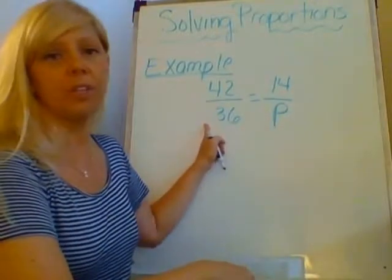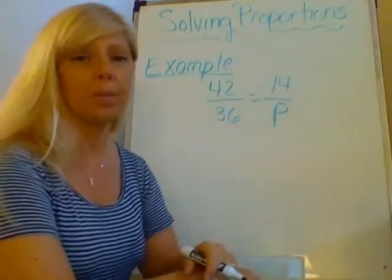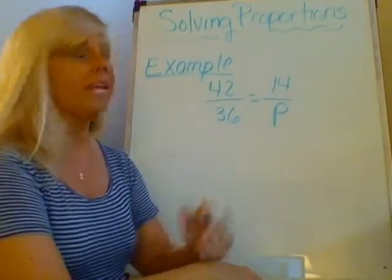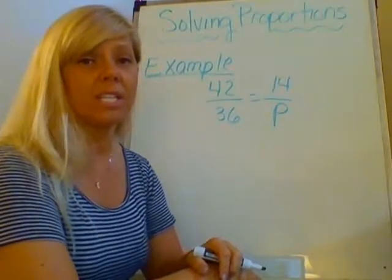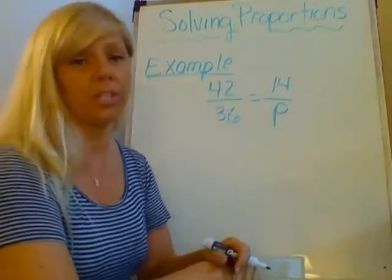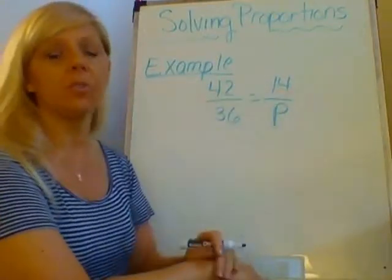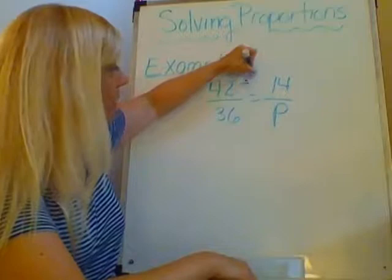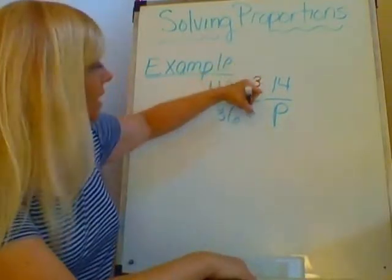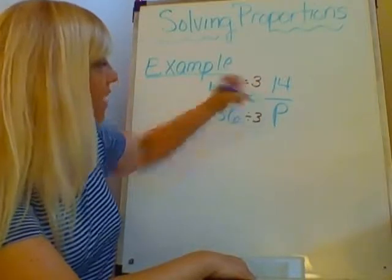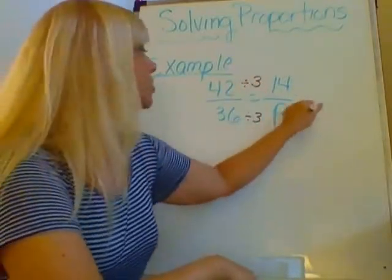So in this example, I have 42 to 36 is equal to 14 over some number P. So in this case, since my number is going down, I need to figure out how many 14s have gone into 42. So this one would be division. So how many 14s are in 42? I'm dividing 42 by 3 to get 14. So I would need to take 36 and divide it by 3 to get my answer, and 36 divided by 3 is 12.